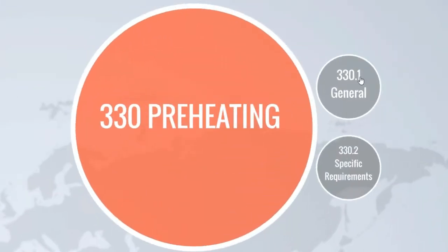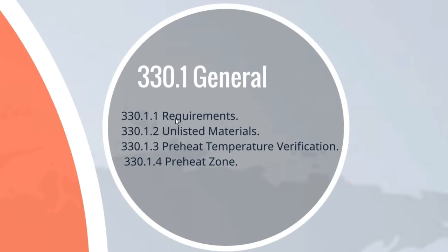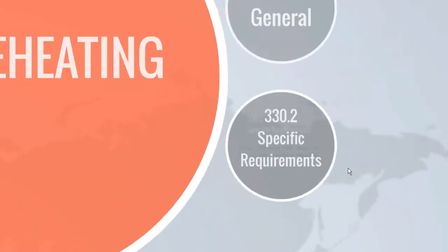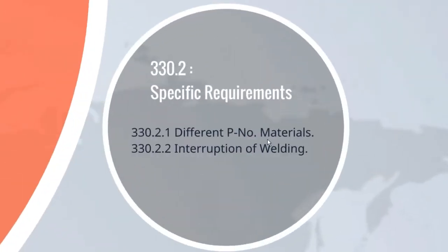Next commences para 330, which is titled Preheating. The first subpara 330.1 provides in general the use of preheating, and is subdivided into subsections highlighting requirements, unlisted materials, temperature verification, and preheat zone. This subpara is followed by subpara 330.2, which provides specific requirements for dissimilar metals and interrupted welding in two subsections.